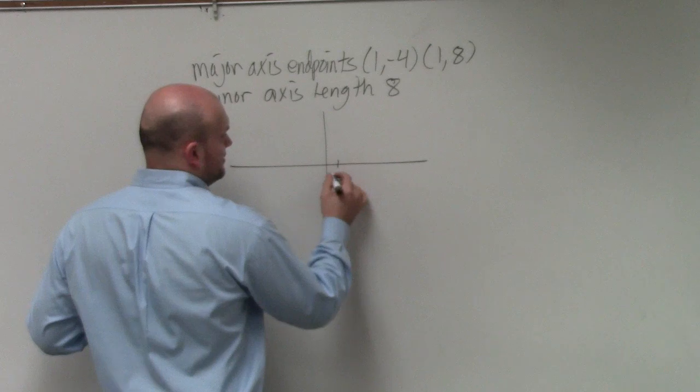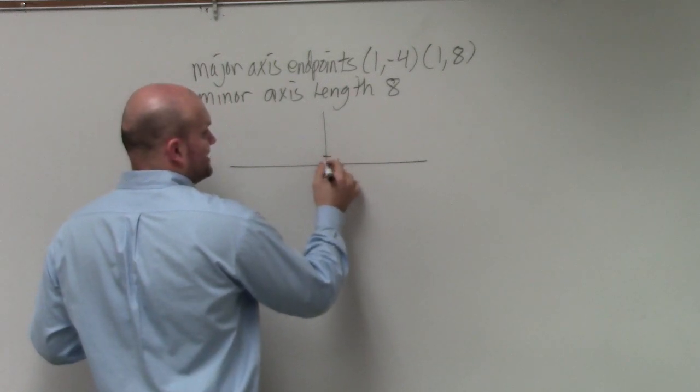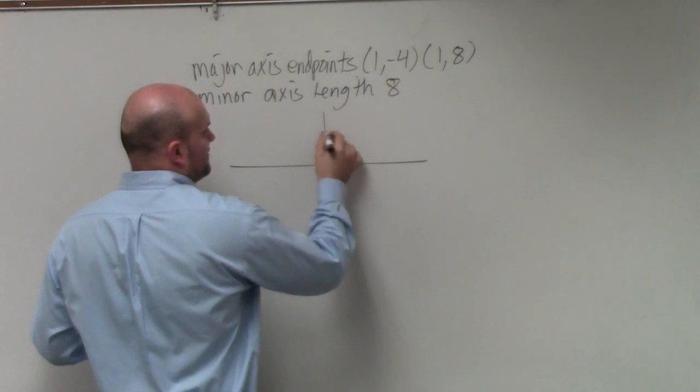So we're doing 1, negative 4. 1, 2, 3, 4. And then 1, 8. 1, 2, 3, 4, 5, 6, 7, 8.